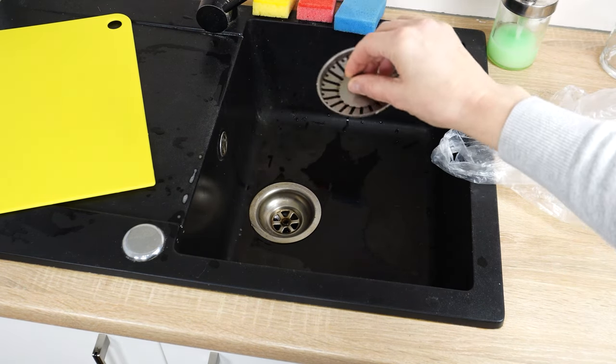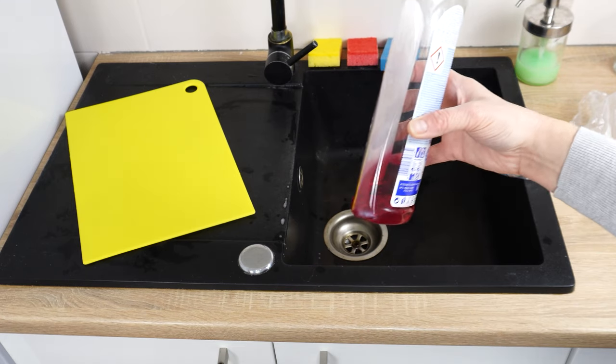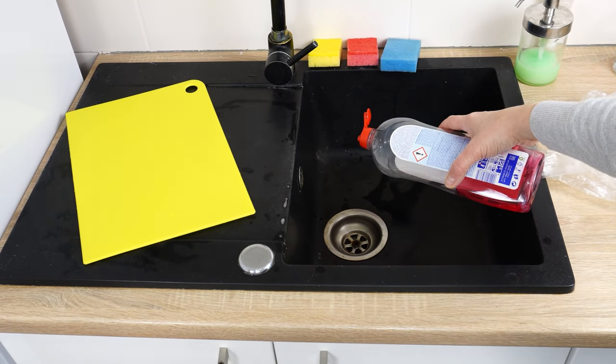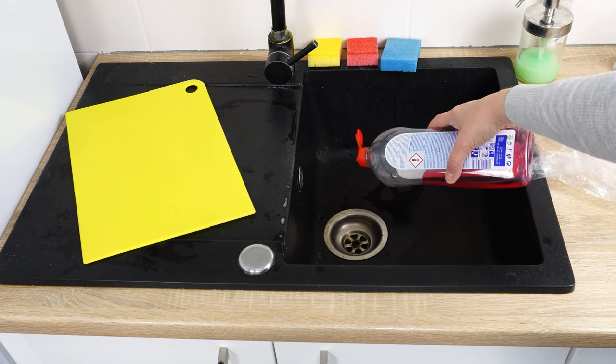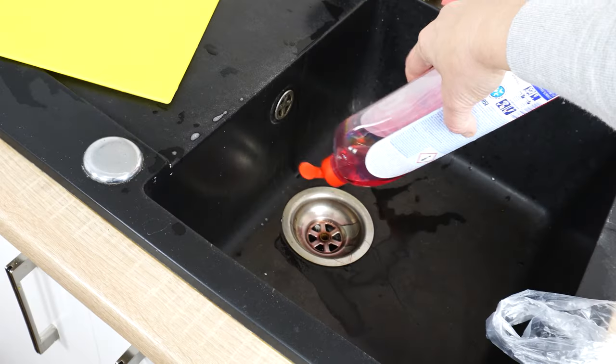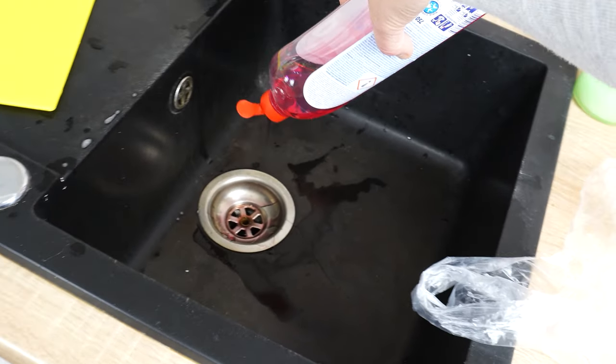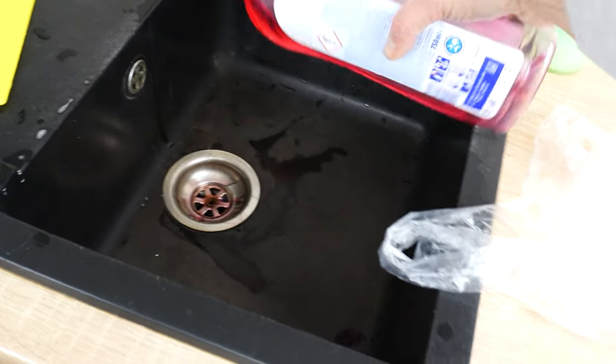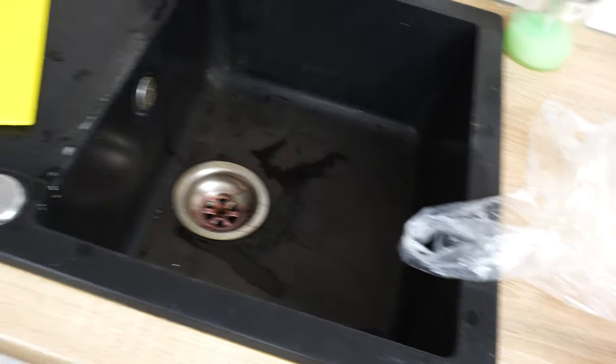First, pour some dish soap. The soap removes grease that accumulates in the drain. There's always a lot of it in the kitchen sink. If you're using this method for the first time, pour quite a bit. There's definitely a lot of grease stuck to the walls of the pipes.